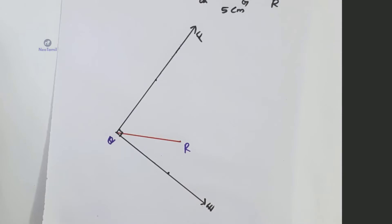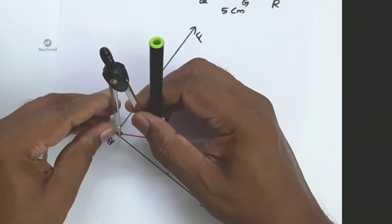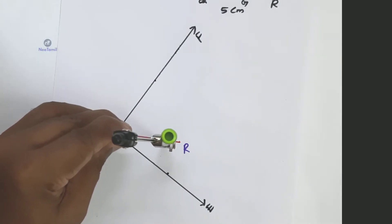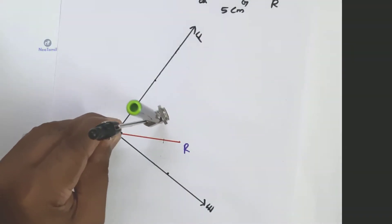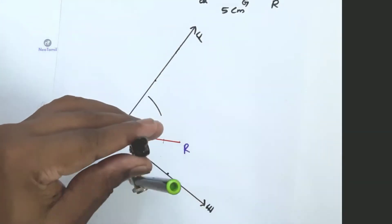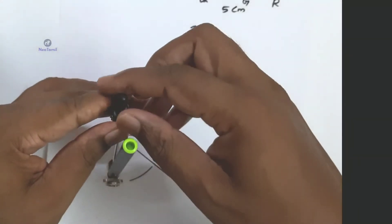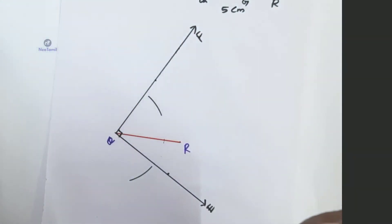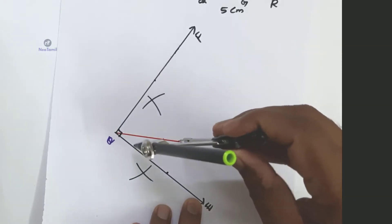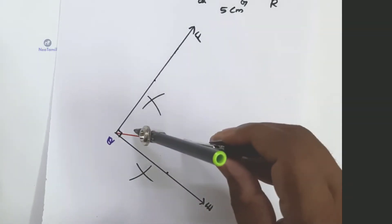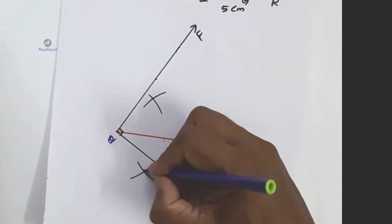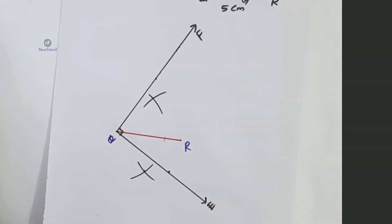Next, draw the perpendicular bisector for QR. With compass set to more than half of QR, place the compass at Q and draw two arcs — one above QR and one below QR. Without changing the measurement, place the compass at R and draw arcs above and below QR. These arcs intersect the previous arcs at two points. Connect those two points — that line is the perpendicular bisector XY of QR.